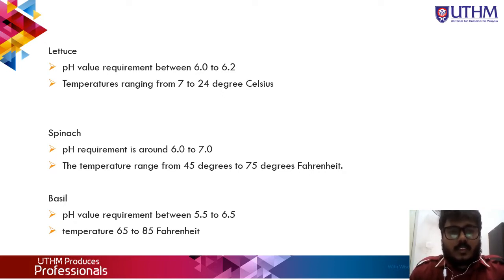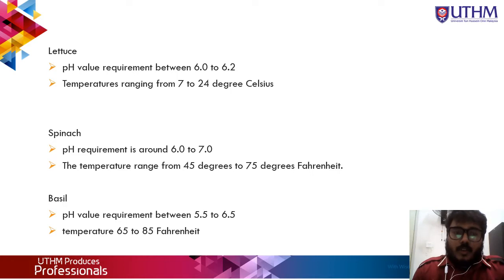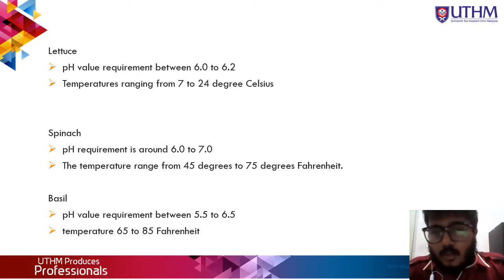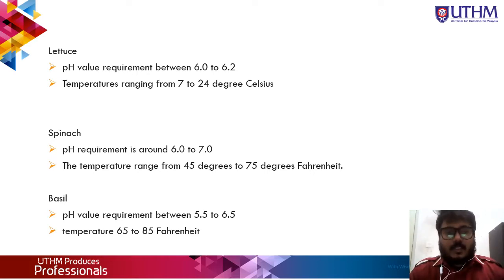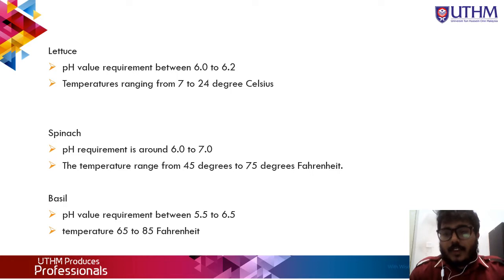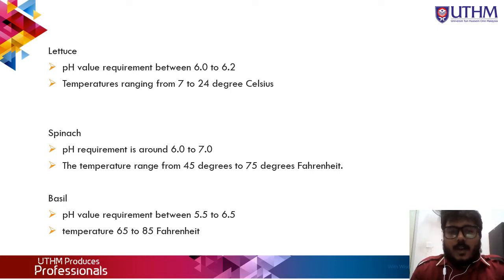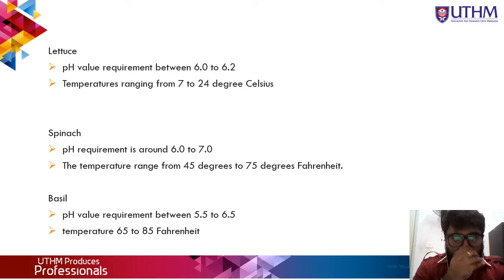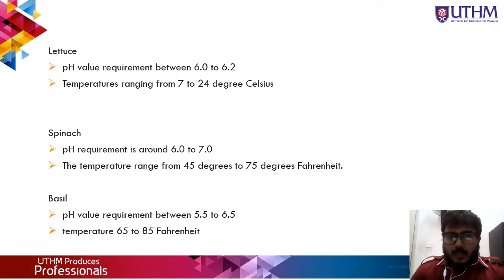The second plant is spinach. Spinach is one of the best leafy greens you can grow in your aquaponics field because of its nutritional value. They don't have deep roots, so the NFT system is a good fit since they can survive without a large growing bed. When growing spinach in aquaponics, it is important to keep in mind that excessive sun exposure might cause the spinach to grow mold and develop a bitter flavor. As the weather becomes hot, make sure to keep the spinach in shade. The spinach pH requirement is around 6.0 to 7.0, and the temperature ranges from 45 to 75 degrees.